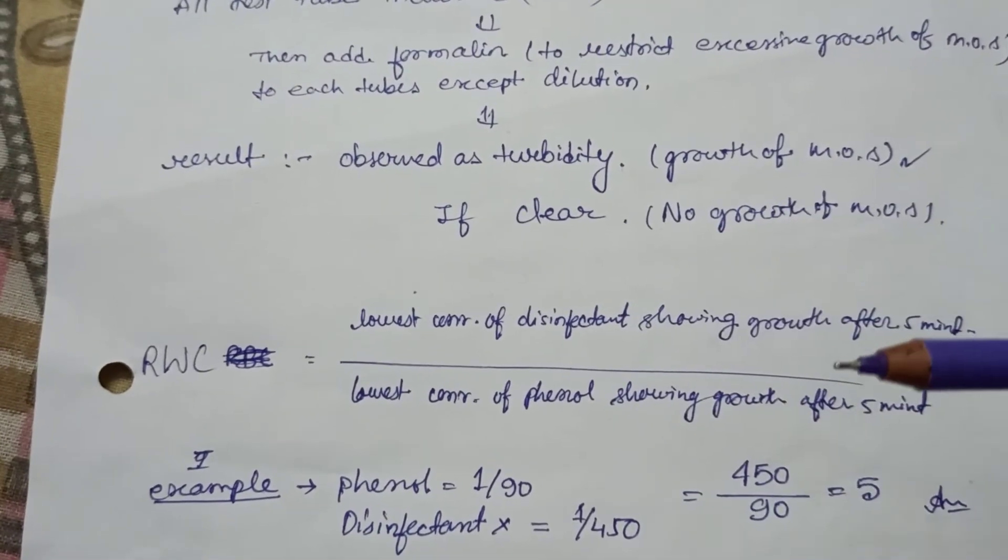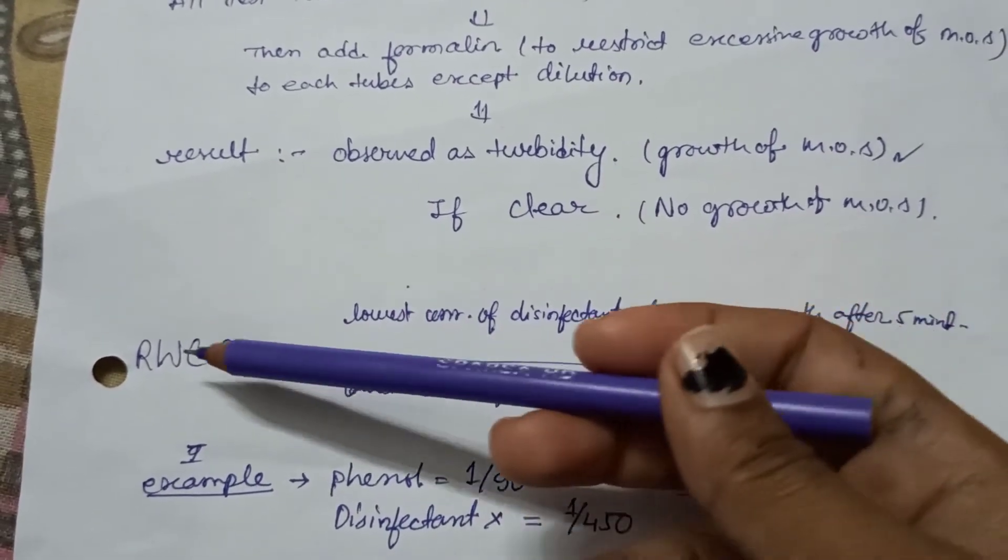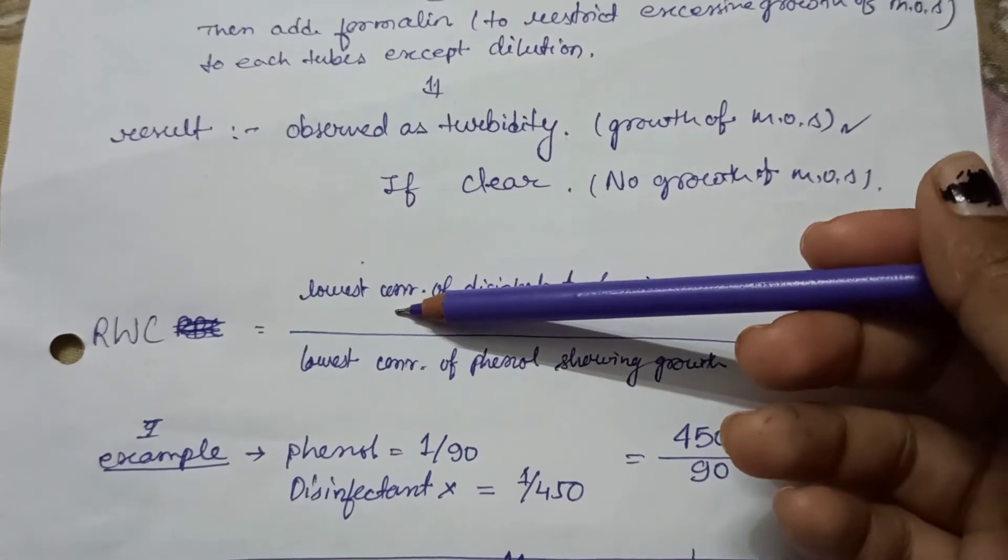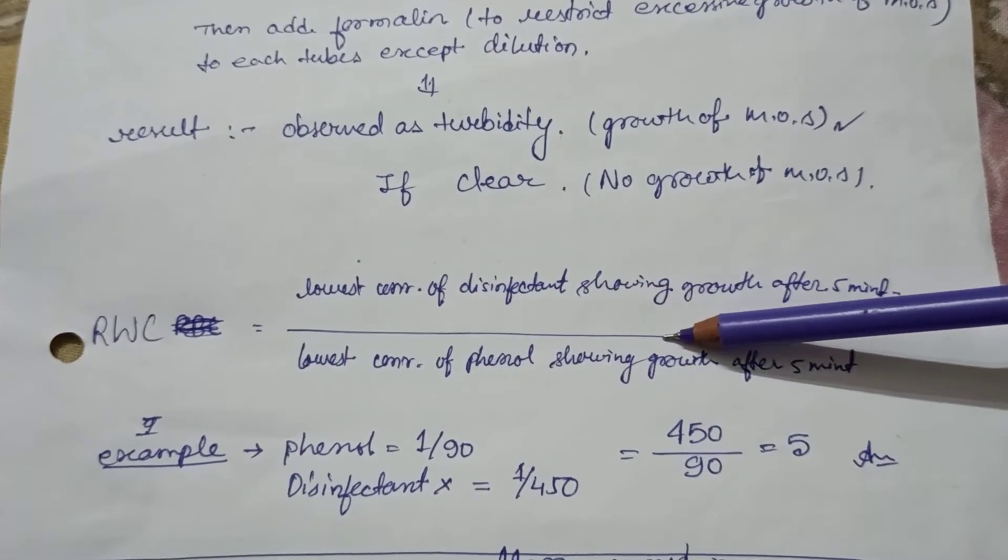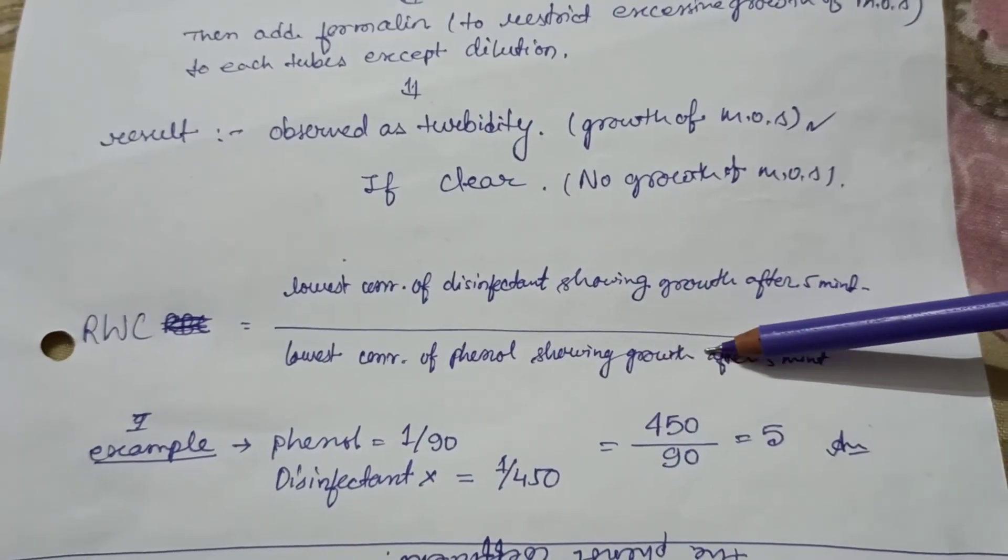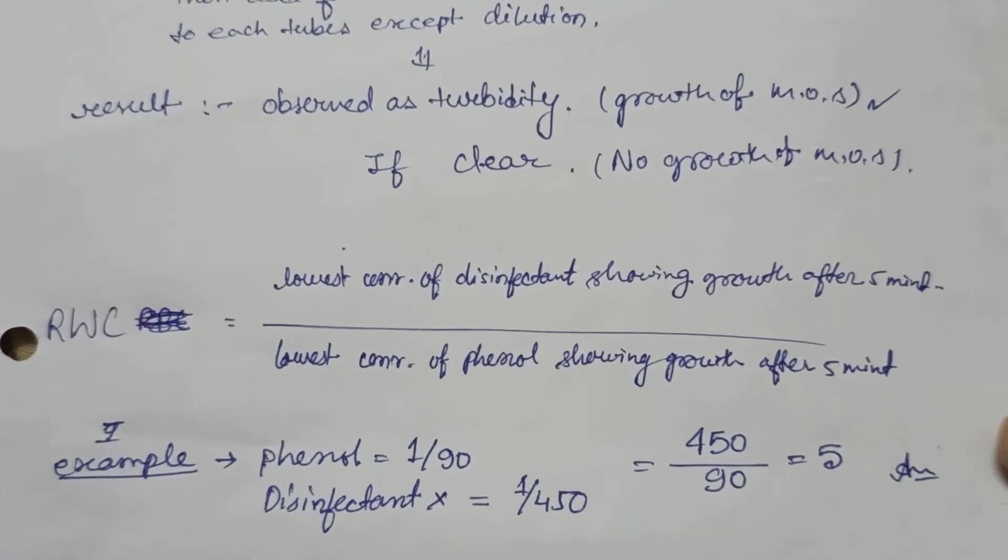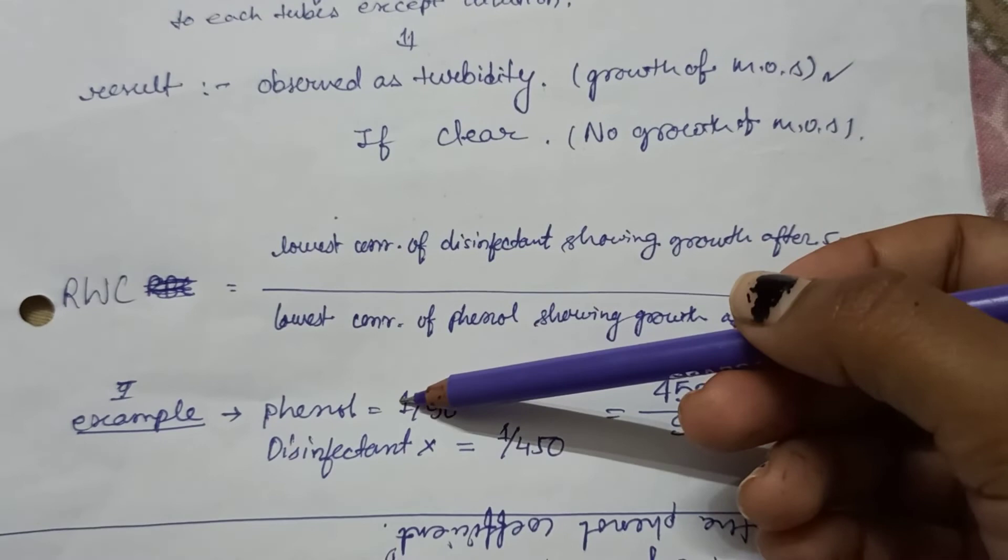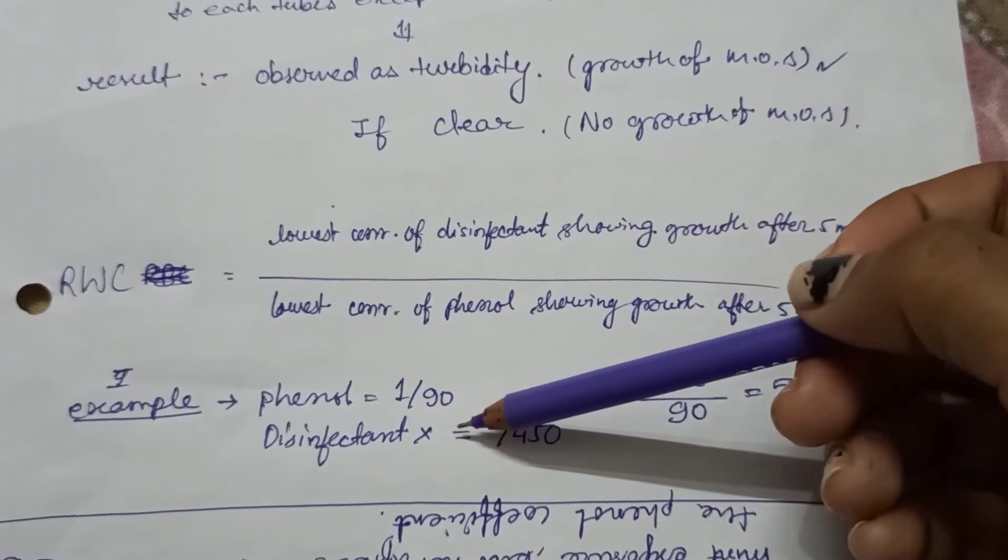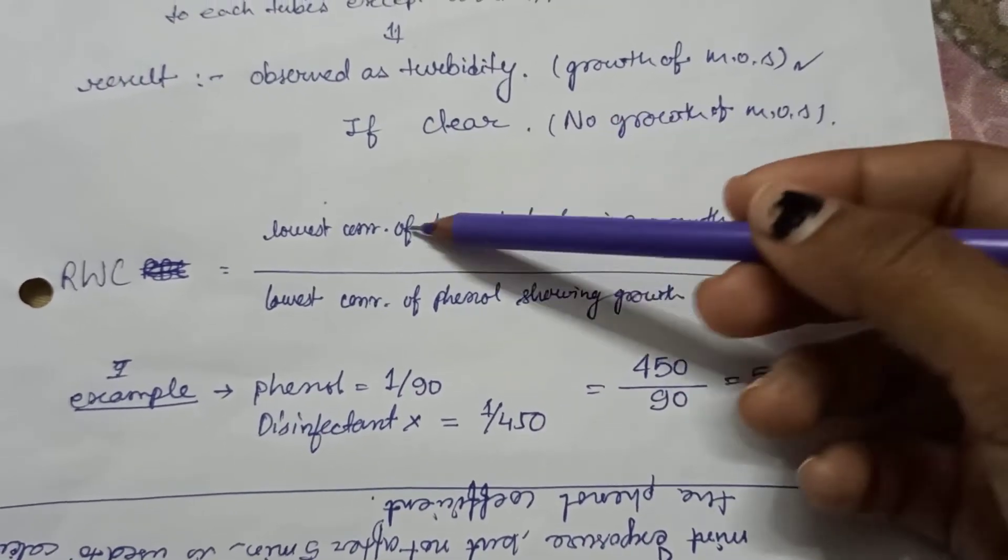We will calculate the phenol coefficient of the test disinfectant solution with this formula, that is Riddle-Walker coefficient. The formula is: we take the lowest concentration of disinfectant showing no growth after five minutes, divided by the lowest concentration of phenol showing no growth after five minutes. For example, if the phenol is showing 1:90 and disinfectant solution showing 1:450, we will take the reciprocal of it and the answer is five.